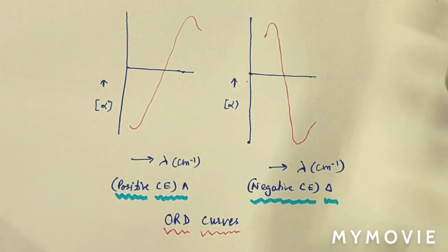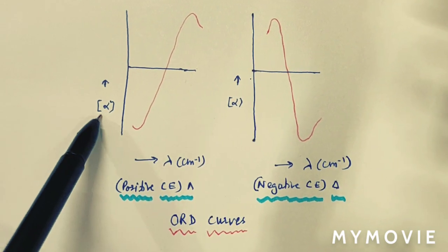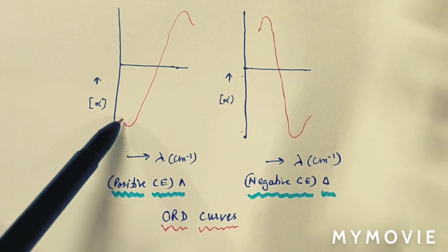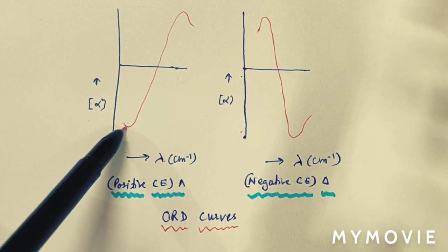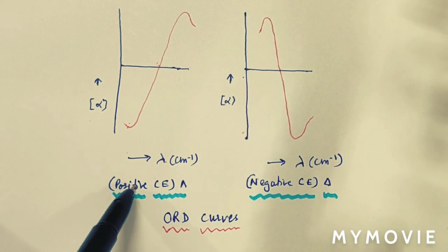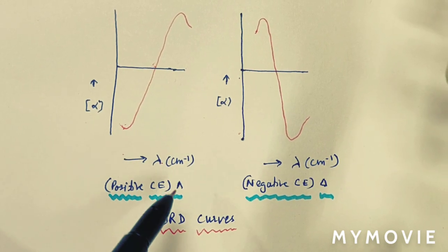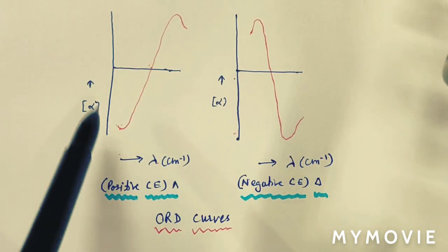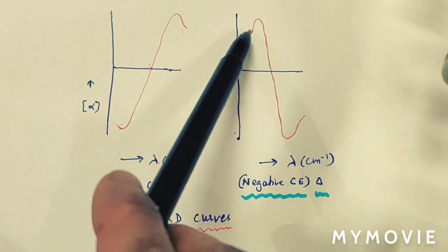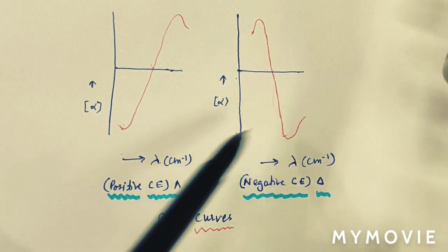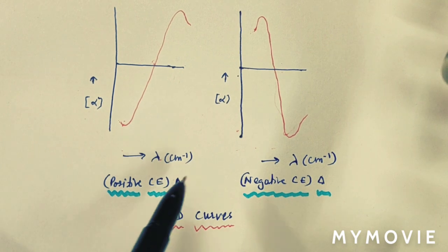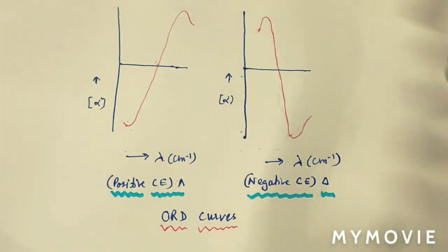There are two types of ORD curves. In the positive type (positive cotton effect), with increasing wavelength, α first decreases, attains a minimum, then increases to a maximum, then decreases again — and when a complex shows this, it is a lambda isomer. In the negative type, α first increases to a maximum, then decreases to a minimum, then increases again — indicating a delta isomer.